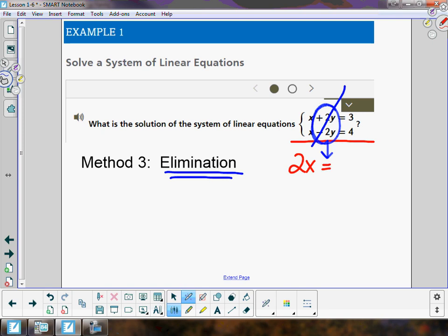Meanwhile, adding straight down, you get 3 + 4 makes 7. I added the x's, I added the y's and they went away, and then I added the 3 and the 4 to get 7. Dividing both sides by 2, we get x = 3.5. Not done with a solution to a system until we get x and y.